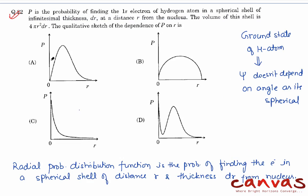Now coming to the next question. Here P is the probability of finding the 1s electron of hydrogen atom. Since they have written 1s electron, it is the ground state of hydrogen atom in a spherical shell of infinitesimal thickness dr at a distance r from the nucleus. The volume of the shell is given as 4πr²dr.